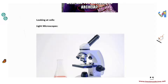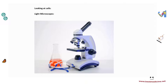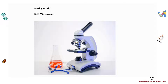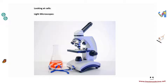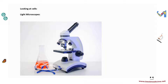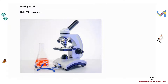Next up is microscopes, because we've been talking about cells but haven't looked at how to actually view them. We need to explore how cells were discovered, how we can view them, and the method of preparing a microscopic slide. These are very high-yield topics for AQA GCSE — they can ask you how to prepare a slide, how to prepare a slide section, and how to adjust a microscope for good resolution.